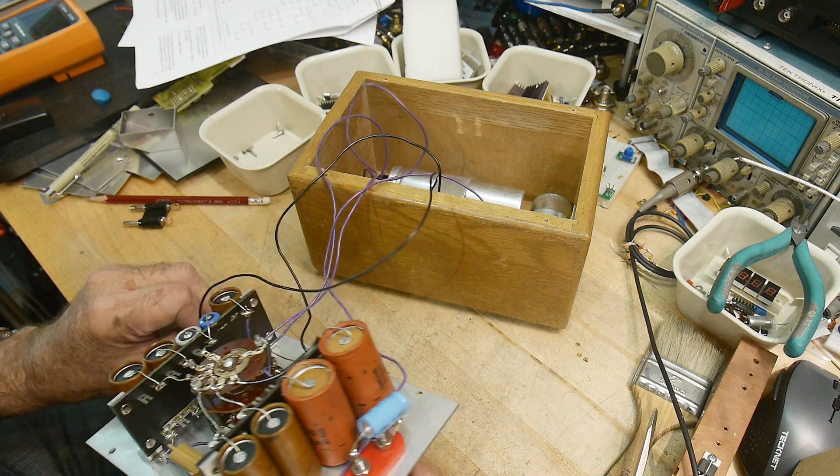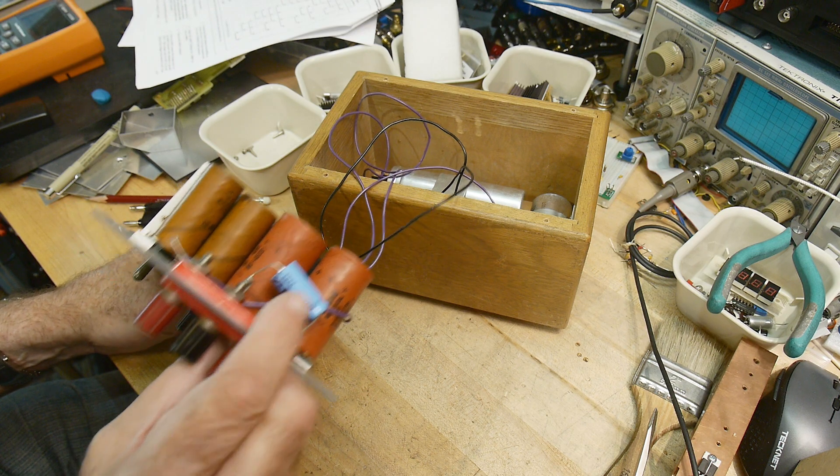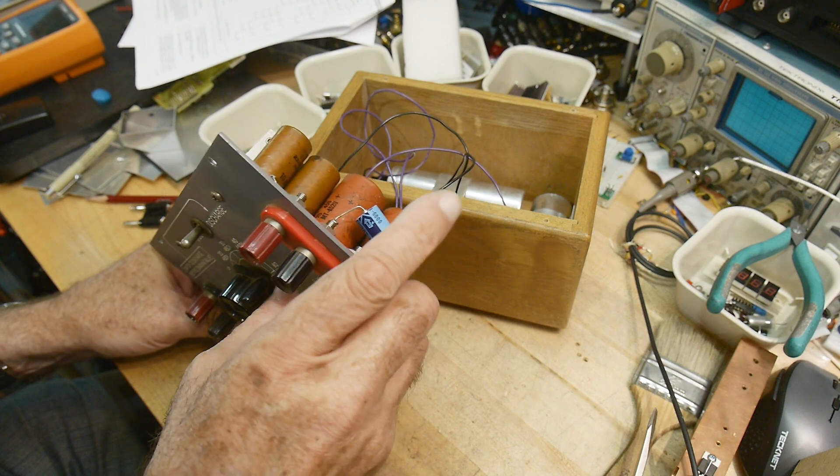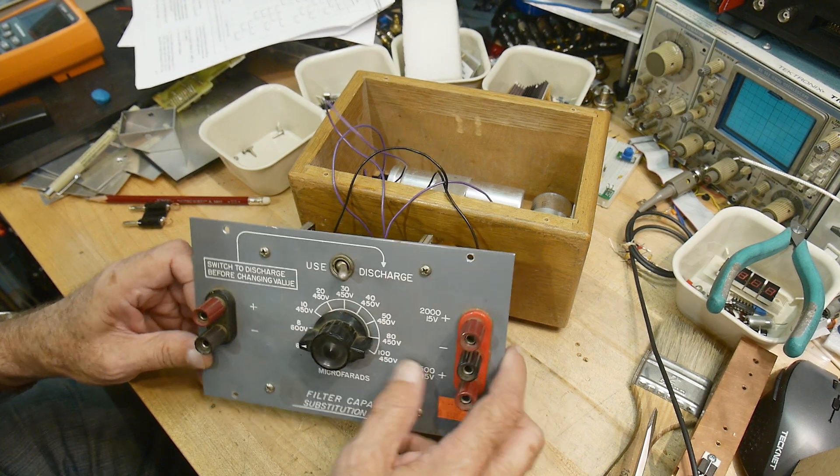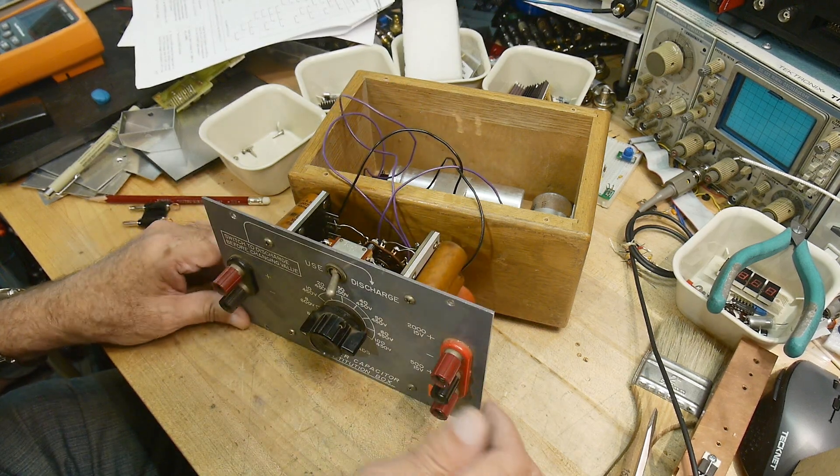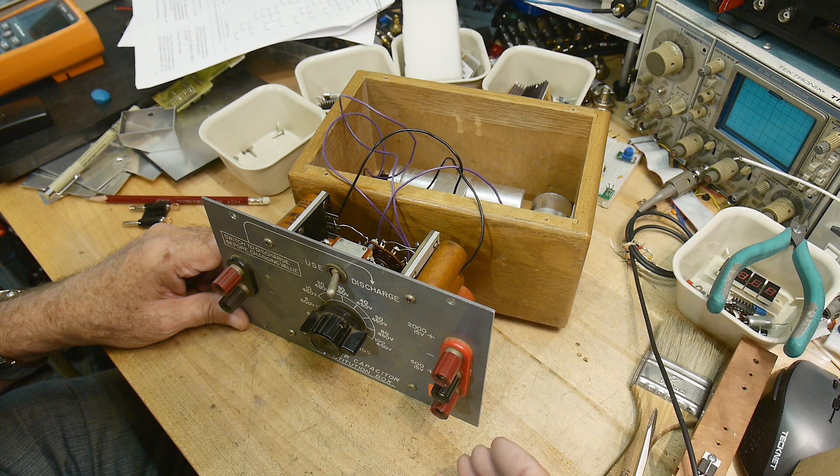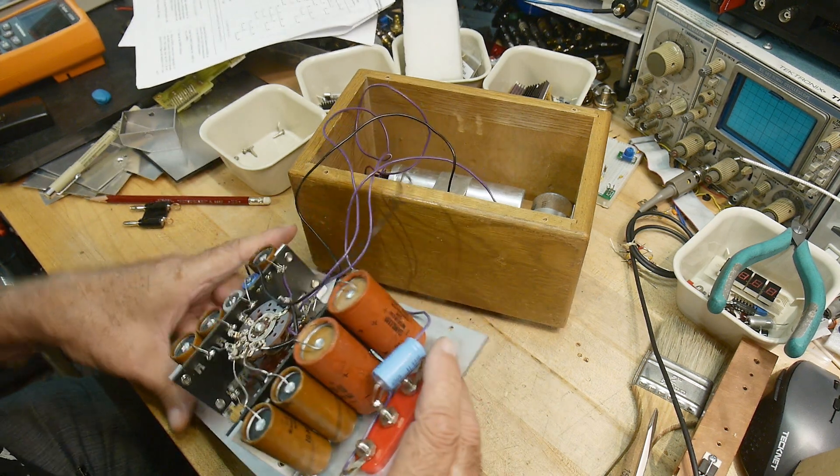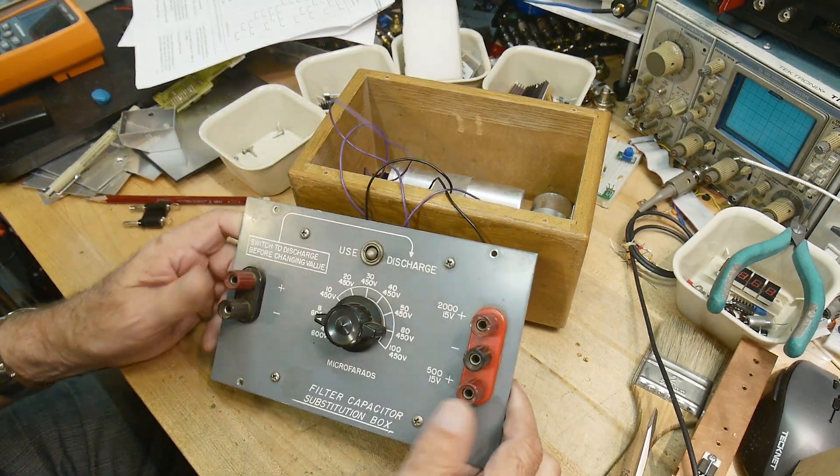Plus and the minus, this still has me confused. There's a 500 microfarad on the output, so there's that 500, and there's a 2000 here. These are 15. I don't know, maybe these are just separate. Yeah, I think this is just a separate little doohickey on the side.